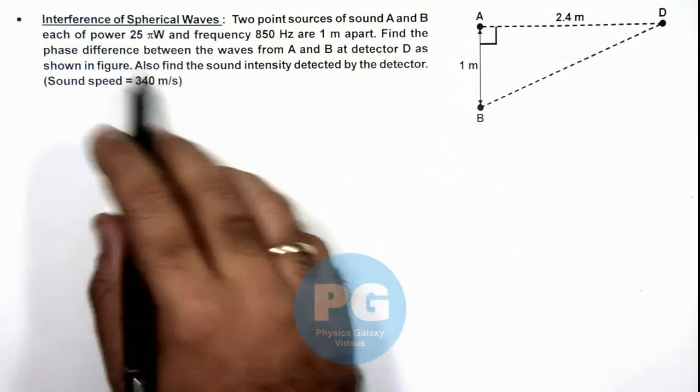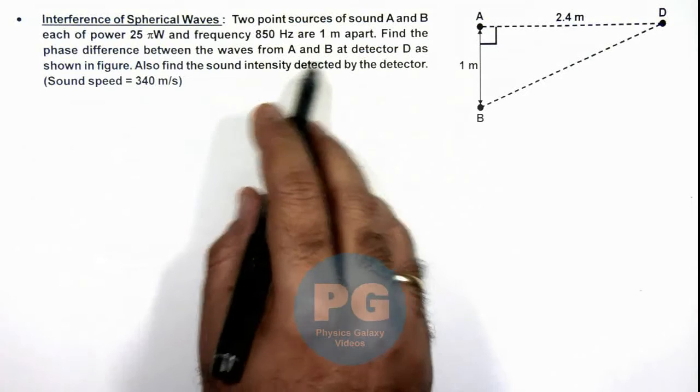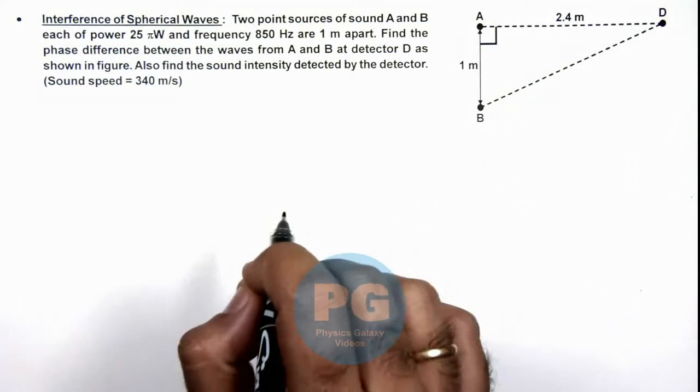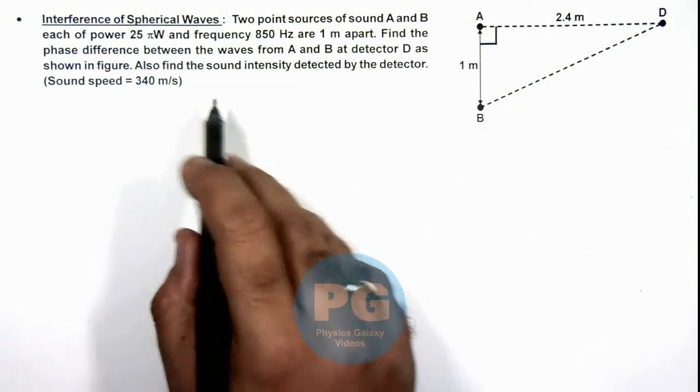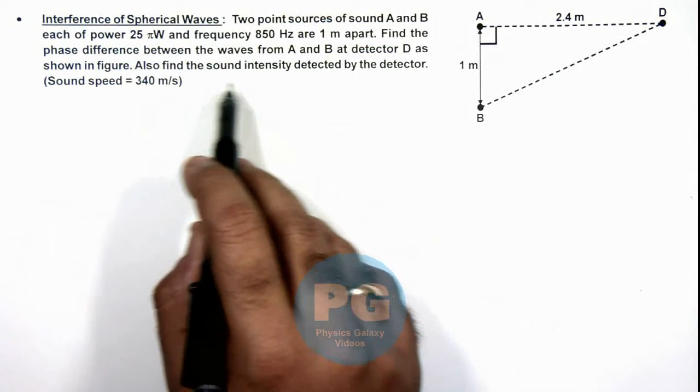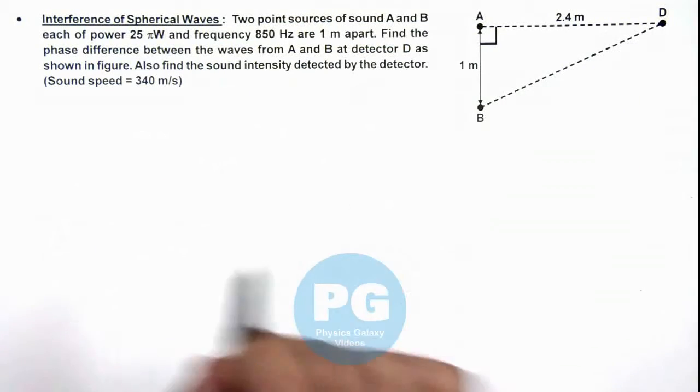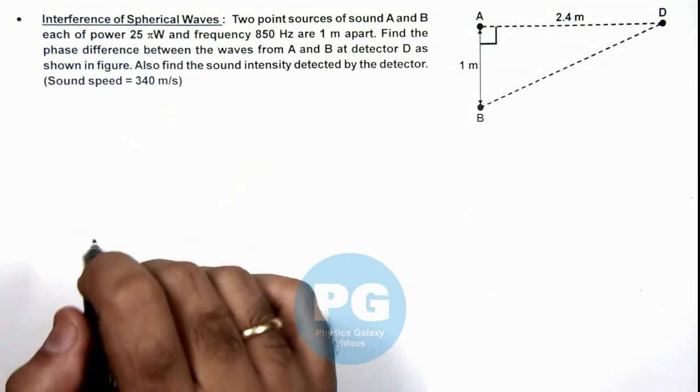We are required to find the phase difference between the waves from A and B at detector D as shown in figure. We are also required to find the sound intensity detected by the detector. Sound speed is also given to us.